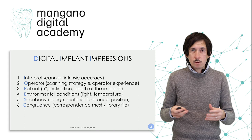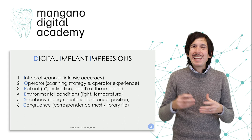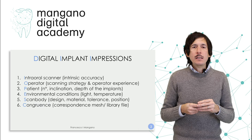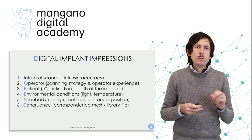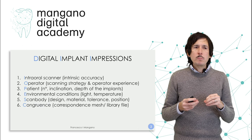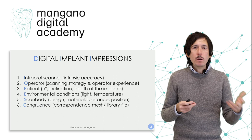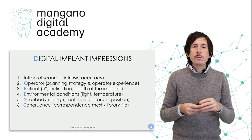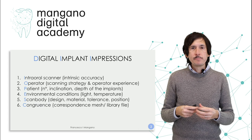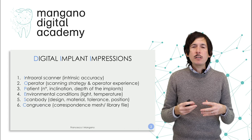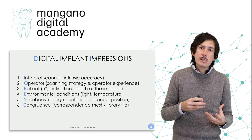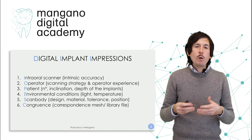The literature supports this concept. Environmental conditions — for example, light conditions — may also affect the final results. One of the most important factors is the scan body, because it is not merely a transfer of the implant position like it was during the analog impression. Here it is more: the design, the material, the manufacturing tolerance, the position when we screw it, and the torque are all very important. They can affect the final quality of the impression, as well as the lack of congruence between the mesh of the scan body and the library file.